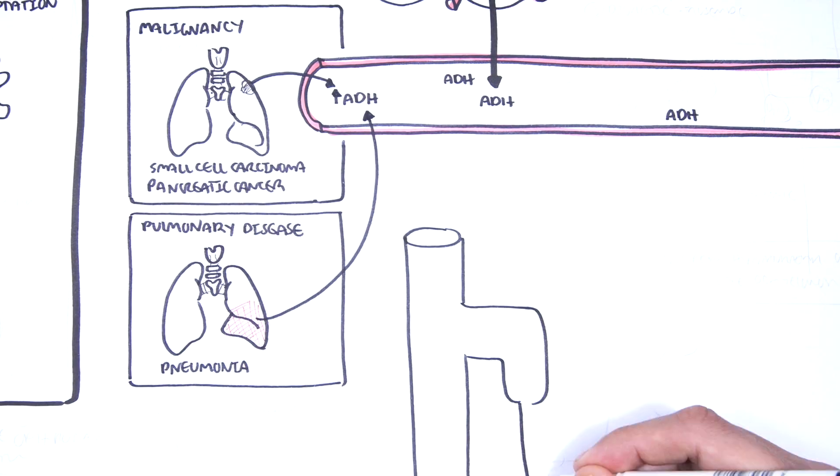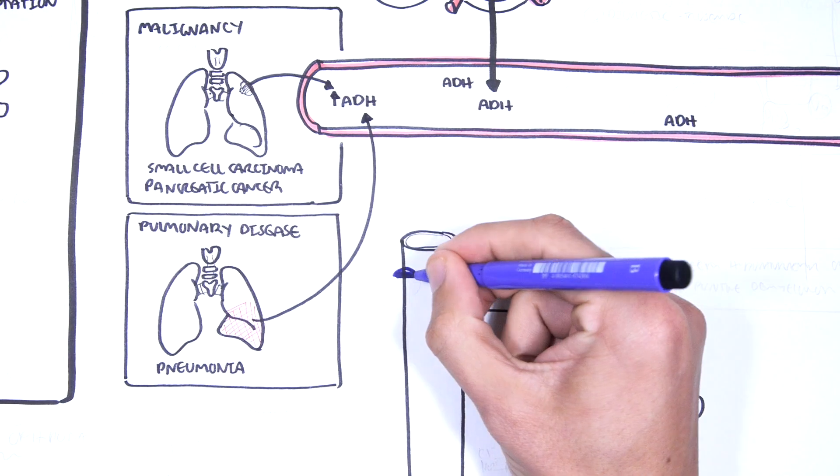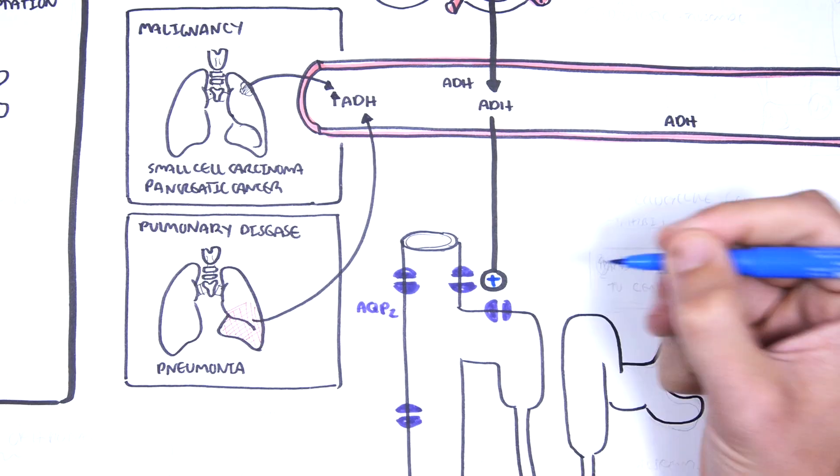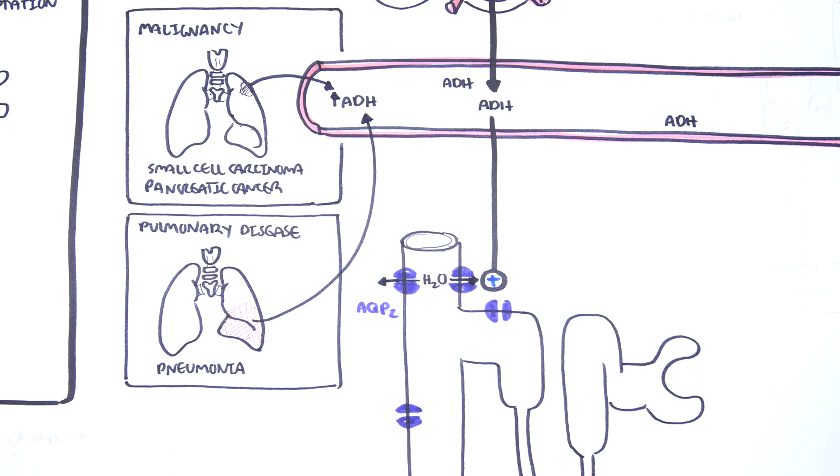And there are nephrogenic causes, mainly the mutation in the aquaporin type 2 channels in the distal collecting ducts, which will increase the retention of water.